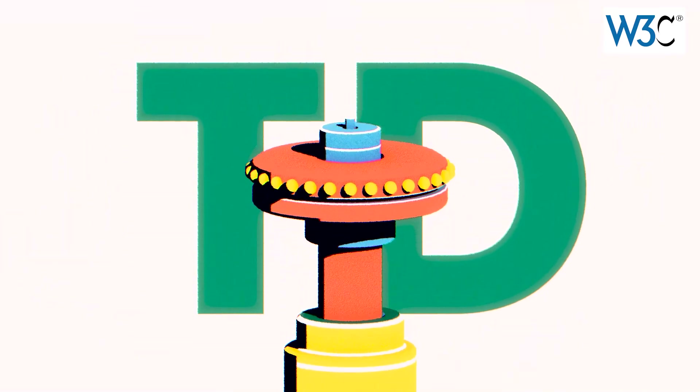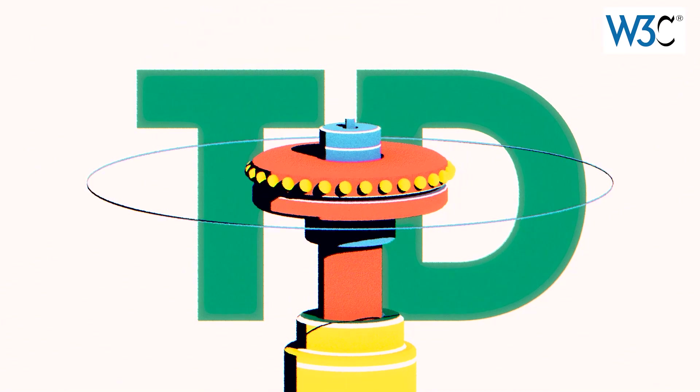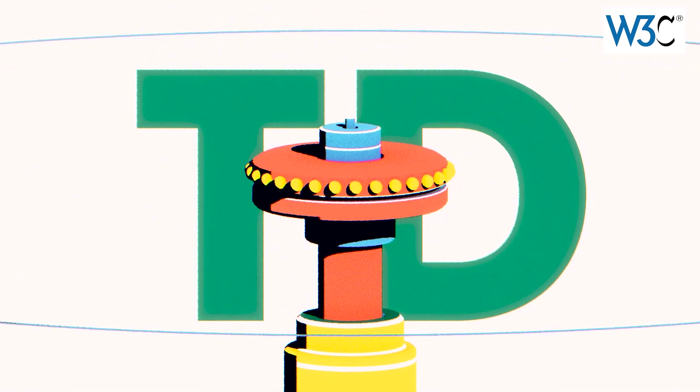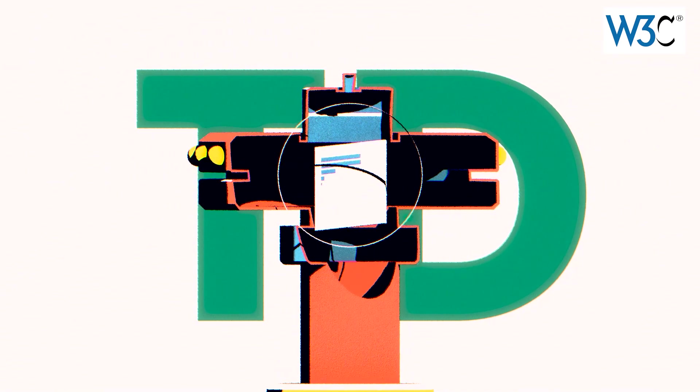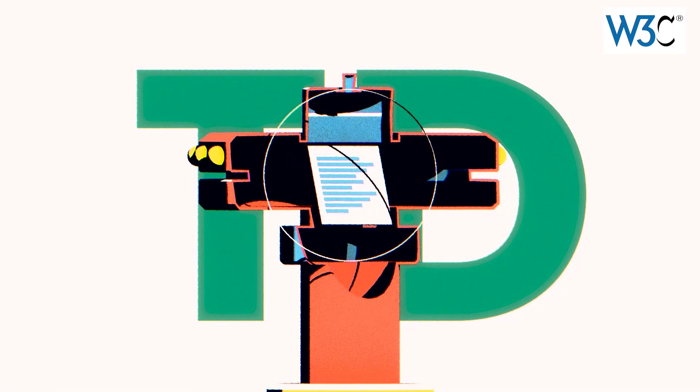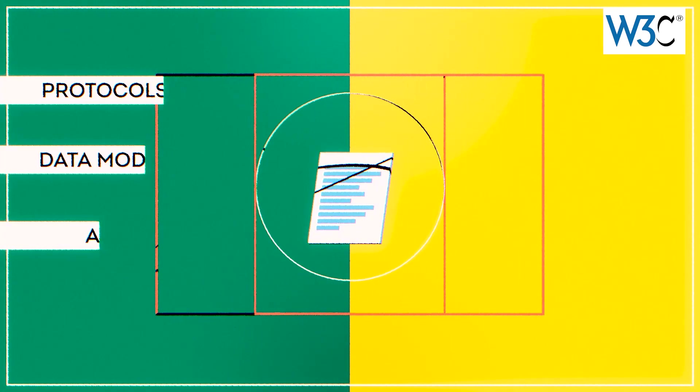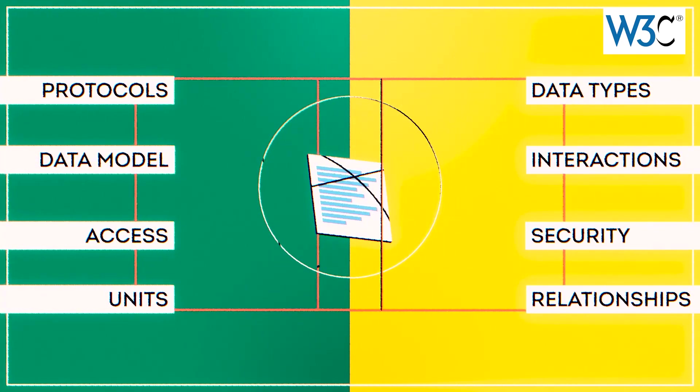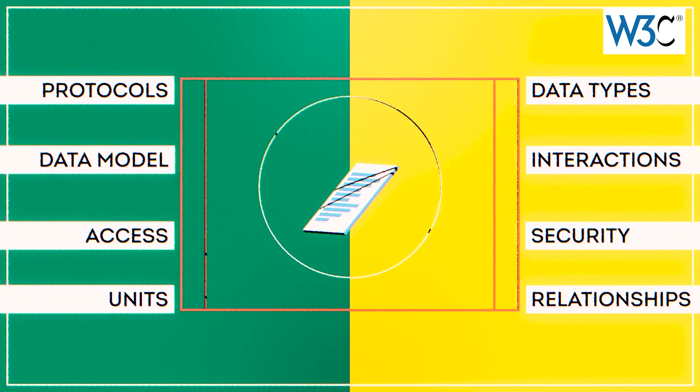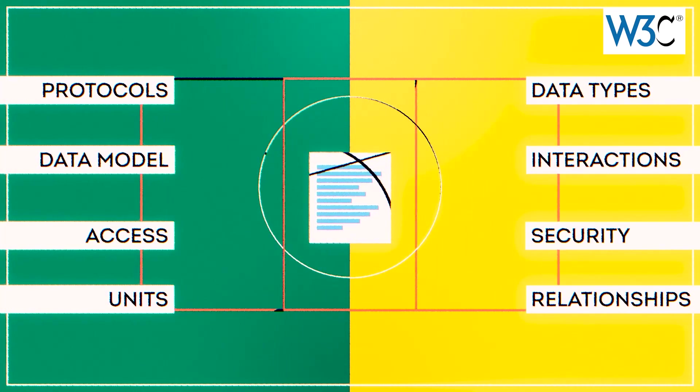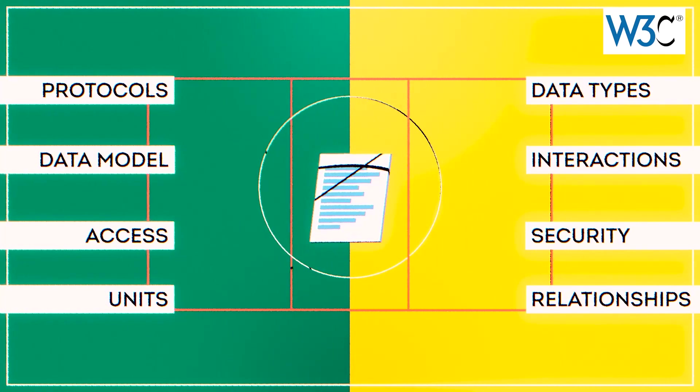The main element of the WOT methodology is a thing description, also known as a TD. The TD is comparable to an index.html for things. Various questions can be answered by the information in the TD like identification, data organization, access, units, types, interactions, security or relationships.